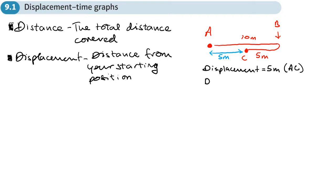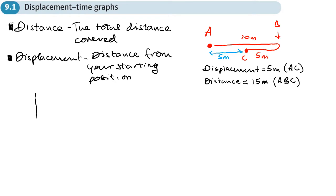Whereas the distance is 10 meters that way and 5 meters back — so if I was walking, I've actually walked a total distance of 15 meters. The distance would be 15 meters, going from A to B and then to C. So you can see the difference between the two.